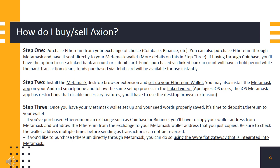How do I buy and sell Axion? Step 1: Purchase Ethereum from your exchange of choice — Coinbase, Binance, etc. You can also purchase Ethereum through Metamask and have it sent directly to your Metamask wallet. More details on this in Step 3.